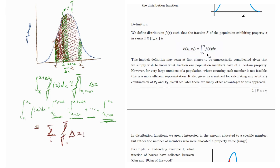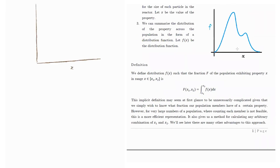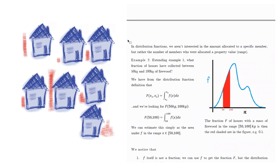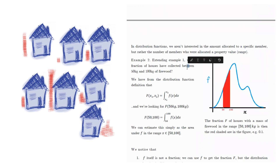There's just a small conceptual leap we need to make — getting used to the idea of X being on the horizontal axis as a property range, and F being related to the fraction of the population in that range. We are not interested in the amount allocated to a specific member. In the houses example, we are not asking how much firewood a particular house has. Instead, we want to know how many elements in our population have the property in a specific range.